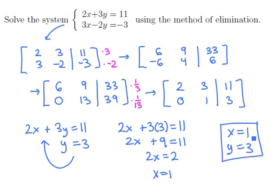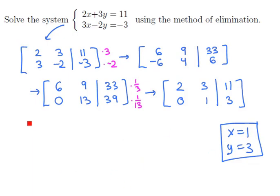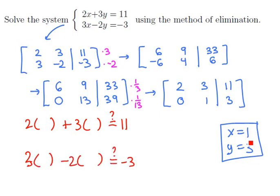One observation that we should make is that it's easy to check that your answers are correct when solving linear systems. Just plug in the x and y values into the two original equations. So if we replace x with 1 and y with 3, the first equation becomes 2 plus 9, which is indeed 11. And the second equation becomes 3 minus 6, which is minus 3. So the two equations check.